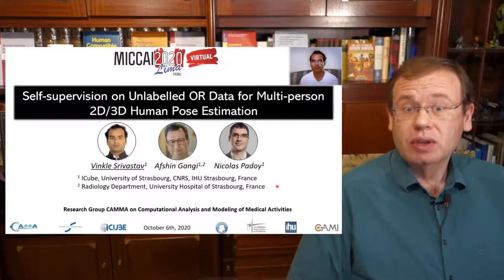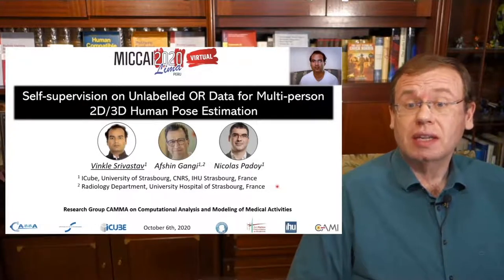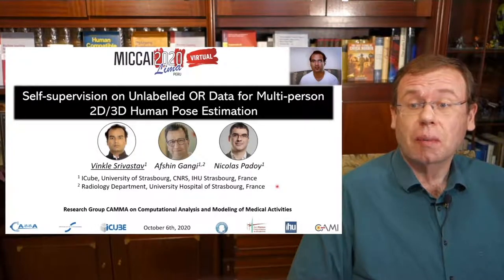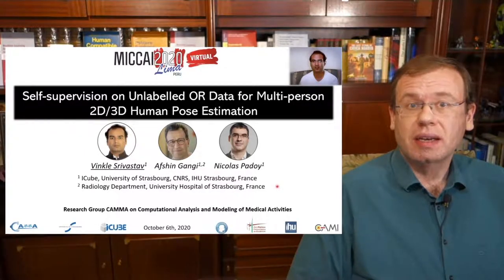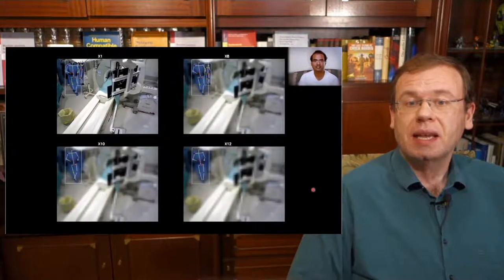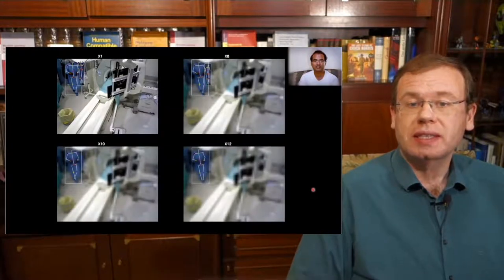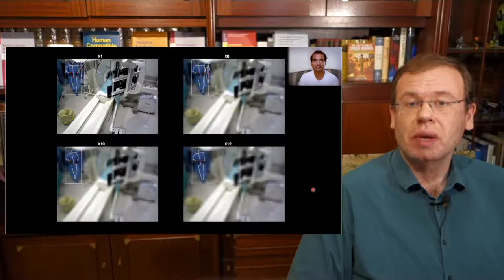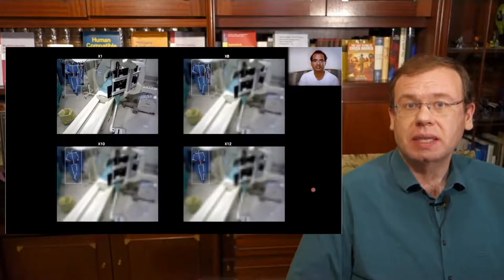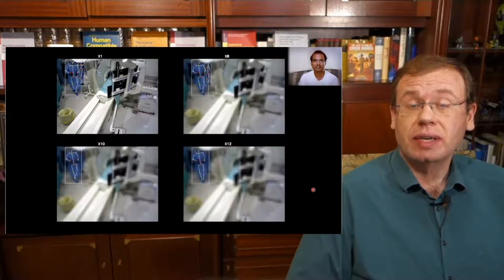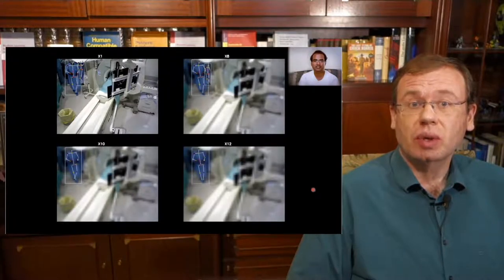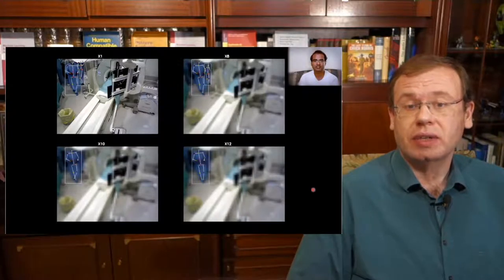The next paper that I want to highlight is self-supervision on unlabeled OR data for multi-person 2D, 3D human pose estimation. And this was presented by Winkel Srivastav from the University of Strasbourg. And here you can see that the idea is, again, that you want to track persons inside of an OR room. But typically this kind of data is very expensive to get. And in particular, the annotation is very time consuming. So you want to find approaches how to do that with less annotations.